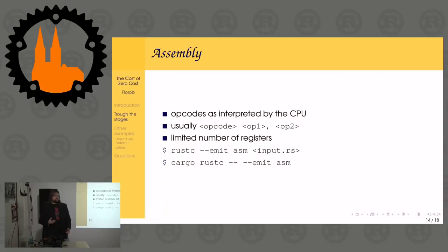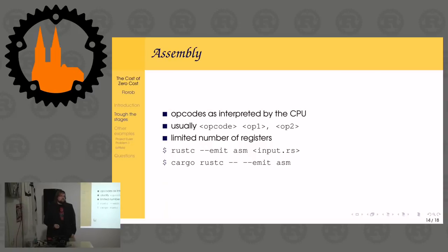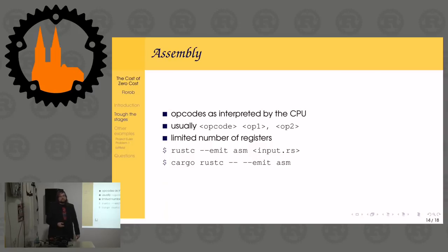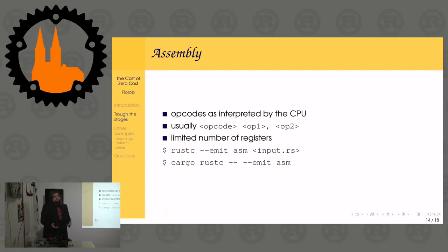More often than not, instructions take the form of an opcode (the operation to perform) then two or three operands. CPUs have a set of registers - usually a fixed set. You can do operations on them: add different registers together, write results to another register, those kinds of things.